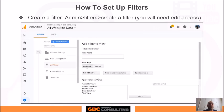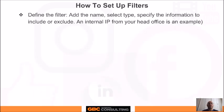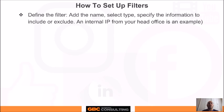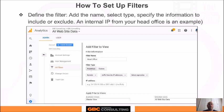To create a filter, go to Admin and click on the filter icon. Note that you will need edit access to the Google Analytics account — if you don't see this option, contact your admin. To define the filter, add a name, select the type, and specify the information to include or exclude. As an example, we'll exclude an internal IP from a head office. We'll name the filter 'Head Office,' select to exclude traffic from this IP address, and enter the IP address of your home office.